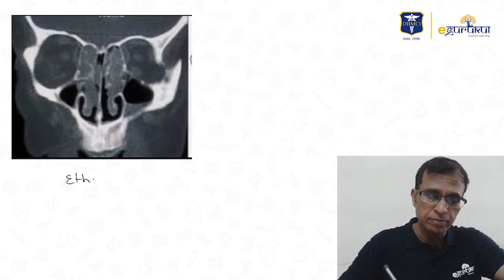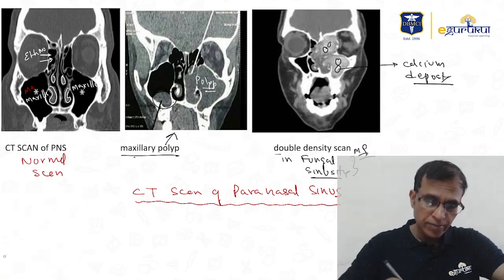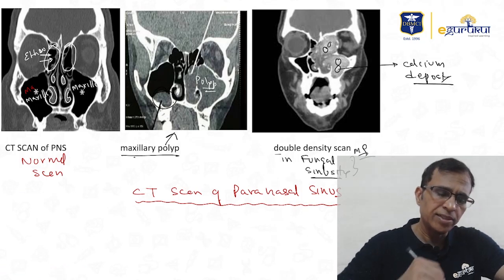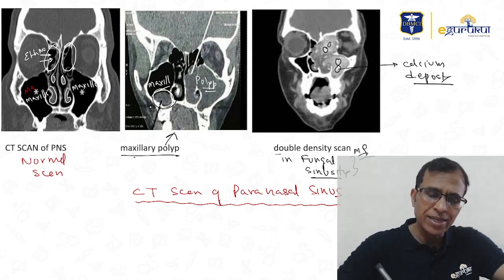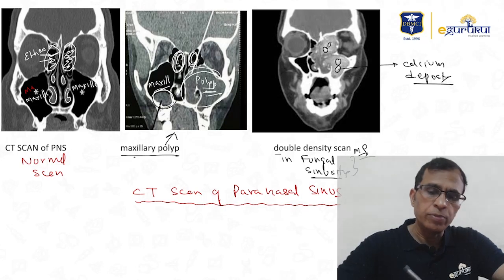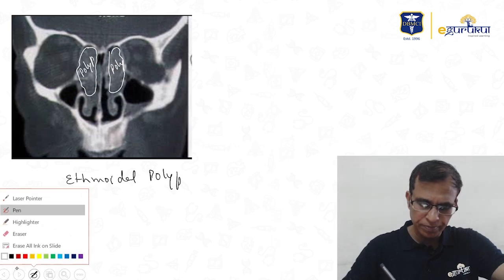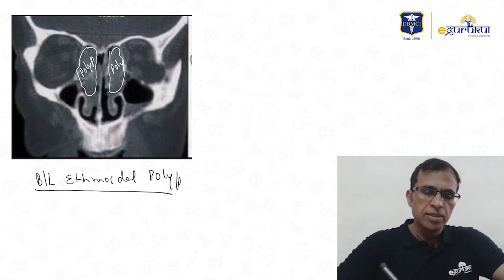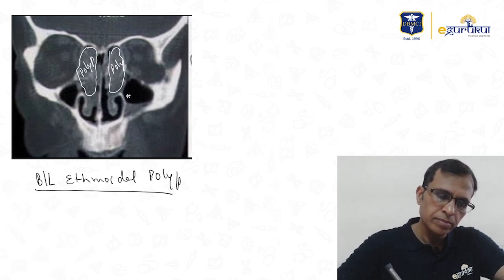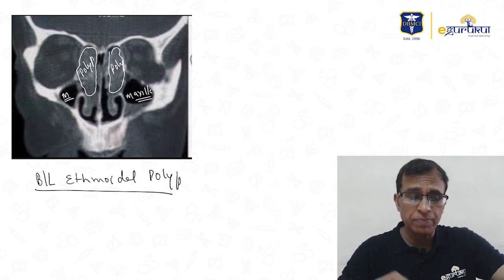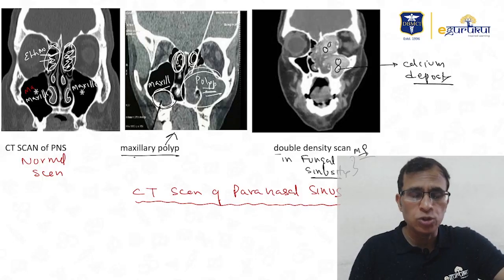This is an ethmoidal polyp. In the earlier CT scan the ethmoid area was identified. If the polyp is in the maxilla, it is a maxillary polyp; if it is in the ethmoid area, it is an ethmoidal polyp. Here the polyp is in the ethmoid area bilaterally. One should be able to differentiate ethmoidal polyp from maxillary polyp.